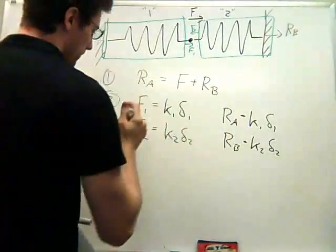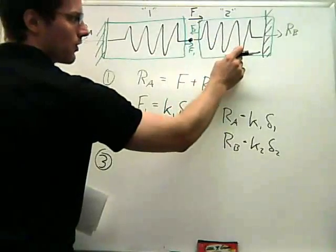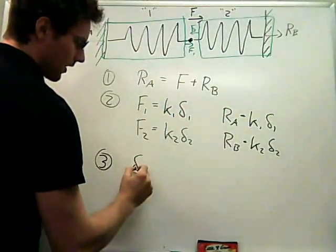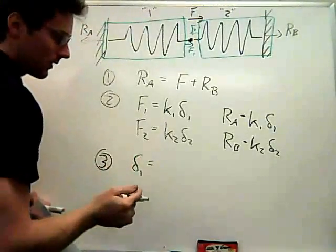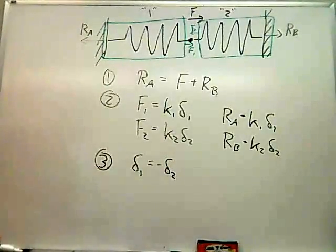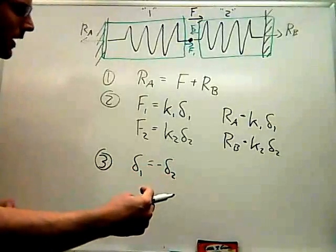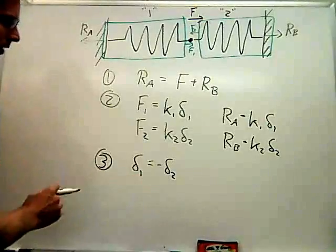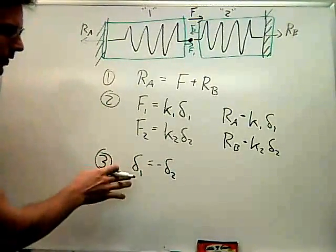And because these are solid walls, my last equation is going to tell me that the amount that I extend the first spring is the same amount that I have to contract the second spring, so that's negative delta 2. So the sign convention in class has been things are positive when you stretch them and they're negative when you contract them. So this is our kinematic equation, and now I have four equations and four unknowns.